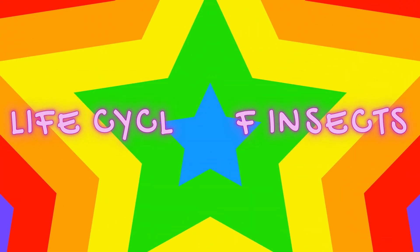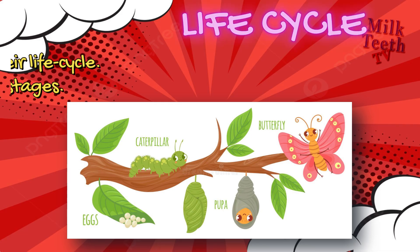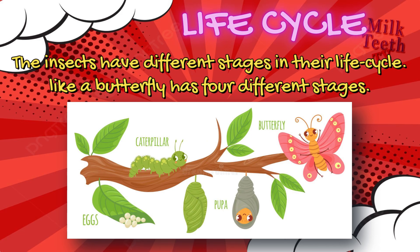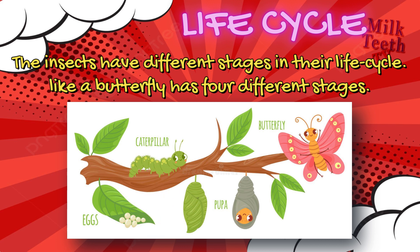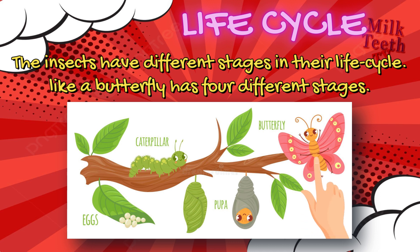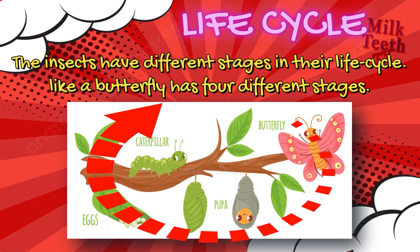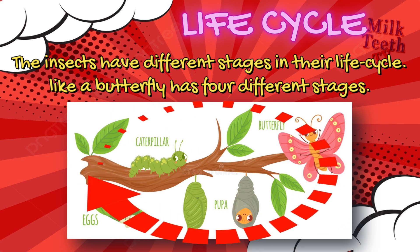Insects have different stages in their life cycle. A butterfly has four different stages: first, a butterfly lays eggs; the eggs hatch into a caterpillar; the caterpillar then covers itself in a hard covering called a pupa; and finally the pupa sheds to reveal a new butterfly. This cycle goes on again and again.